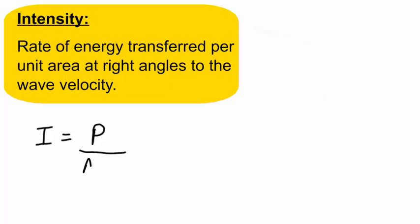I'm going to write area out in full here rather than using A, because I don't want to get confused with amplitude, which we'll be talking about a little bit later. So, intensity equals power divided by area.